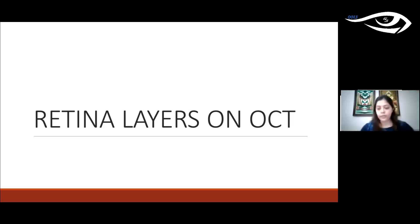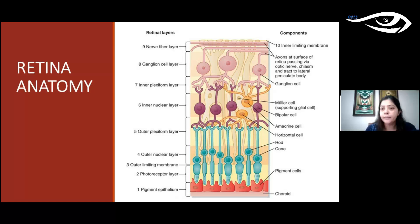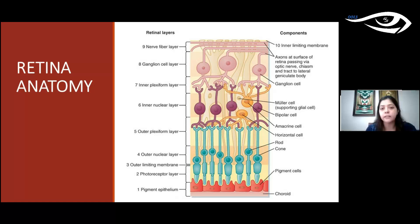Before interpreting OCT, let's review the retinal layers. The retina has 10 layers. Three are composed of cells: the photoreceptors, which convert light to electrical energy; the outer nuclear layer, containing the photoreceptor cell bodies; and the ganglion cell layer, whose axons form the optic nerve. Supporting cells — Müller cells, bipolar cells, and amacrine cells — form the inner nuclear layer. The inner plexiform layer is the junction between the ganglion cell and inner nuclear layers; the outer plexiform layer is between the outer and inner nuclear layers. Below the photoreceptors is the RPE, and above the nerve fiber layer is the internal limiting membrane.